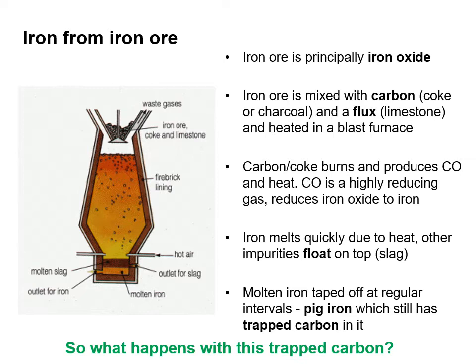The iron melts quickly due to the heat, and other impurities float to the top — this is known as slag, which is removed. Molten iron is tapped off at regular intervals as pig iron, which still has carbon trapped in it.